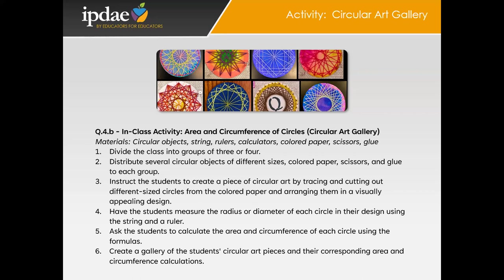Instruct the students to create a piece of circular art by tracing and cutting out different sized circles from the colored paper, arranging the circles in a visually appealing design that showcases their creativity. Once the students have completed their designs, have them measure the radius or diameter of each circle using a string and ruler — this helps them understand the dimensions and proportions of circles. Now ask the students to calculate the area and circumference of each circle using the appropriate formulas, encouraging them to use calculators to ensure accuracy and efficiency.